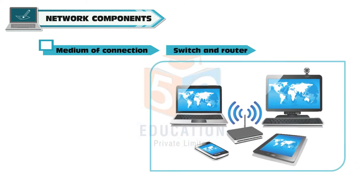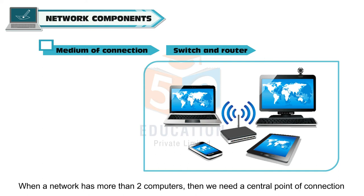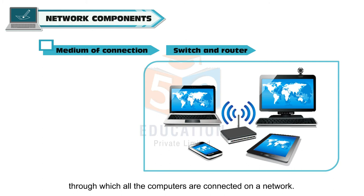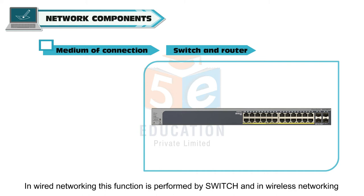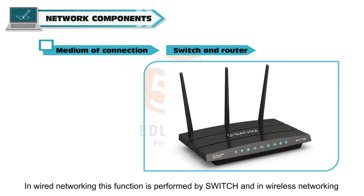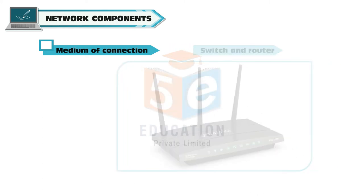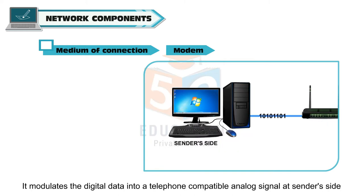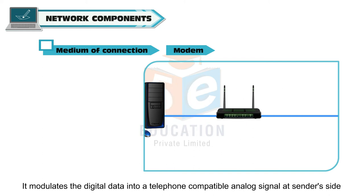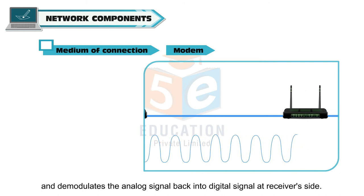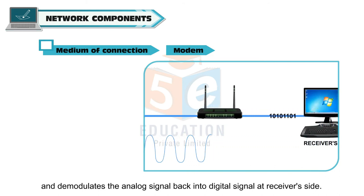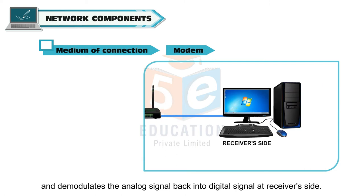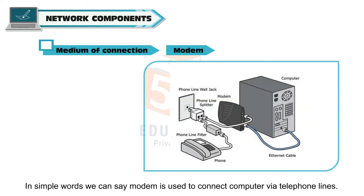Switch and Router: when a network has more than two computers, we need a central point of connection through which all computers are connected. In wired networking, this function is performed by a switch; in wireless networking, routers are used to transmit radio signals. Modem is short for modulator-demodulator. It modulates digital data into a telephone-compatible analog signal at the sender's side and demodulates the analog signal back into a digital signal at the receiver's side. In simple words, a modem is used to connect a computer via telephone lines.